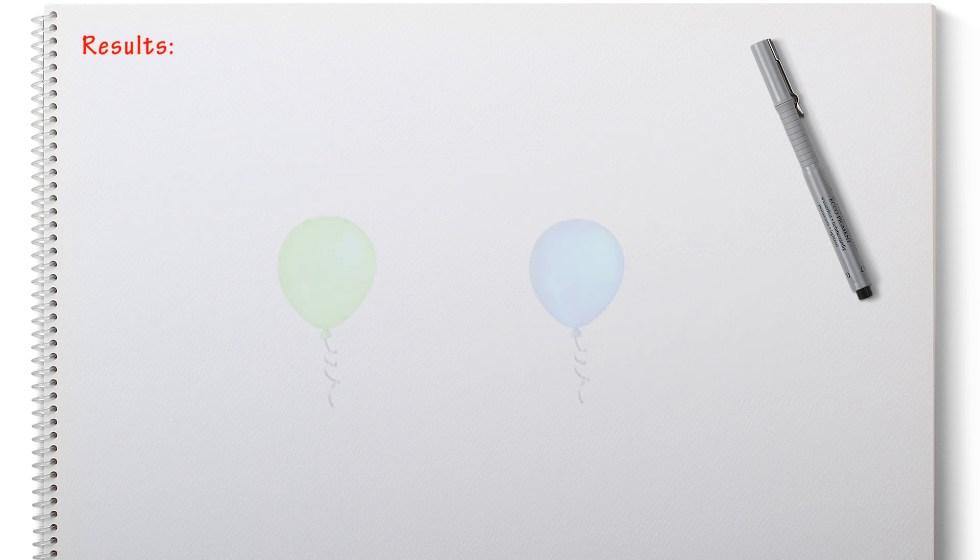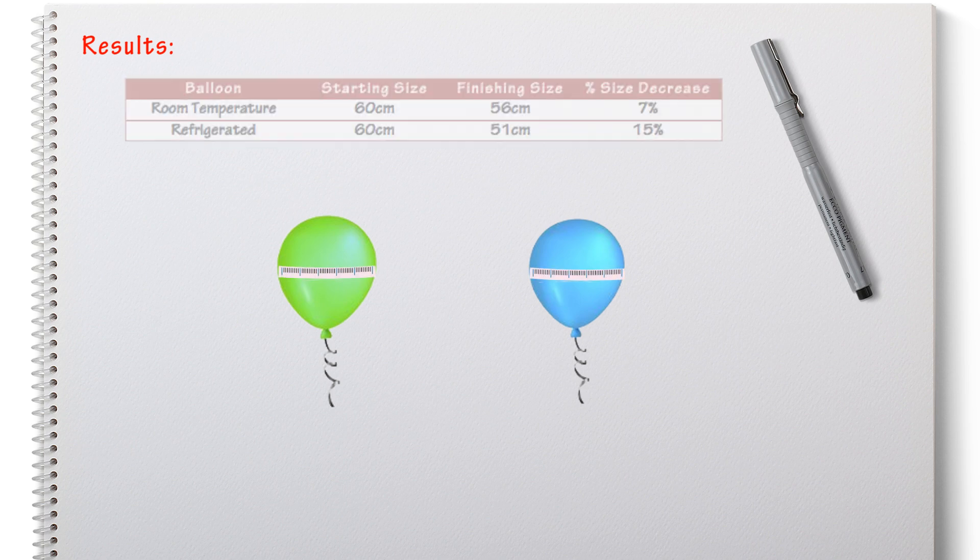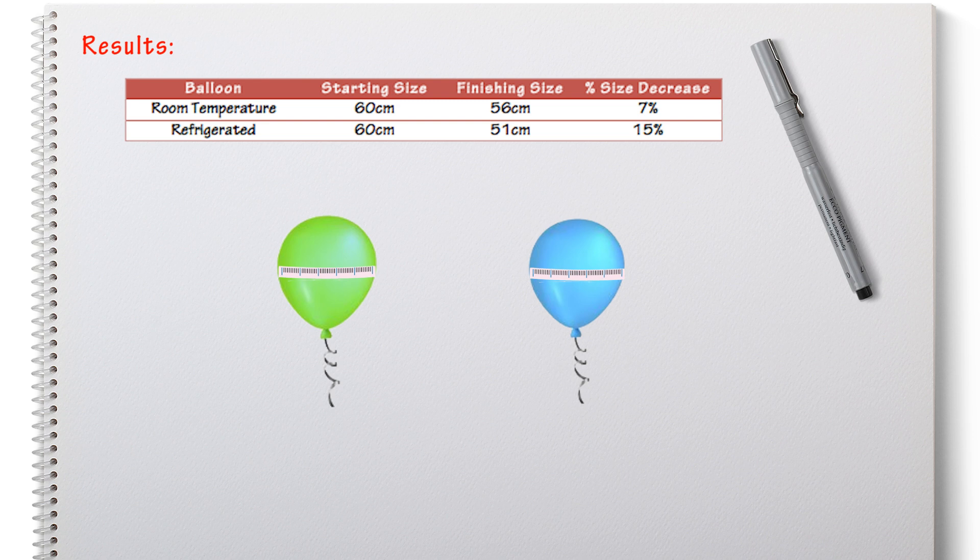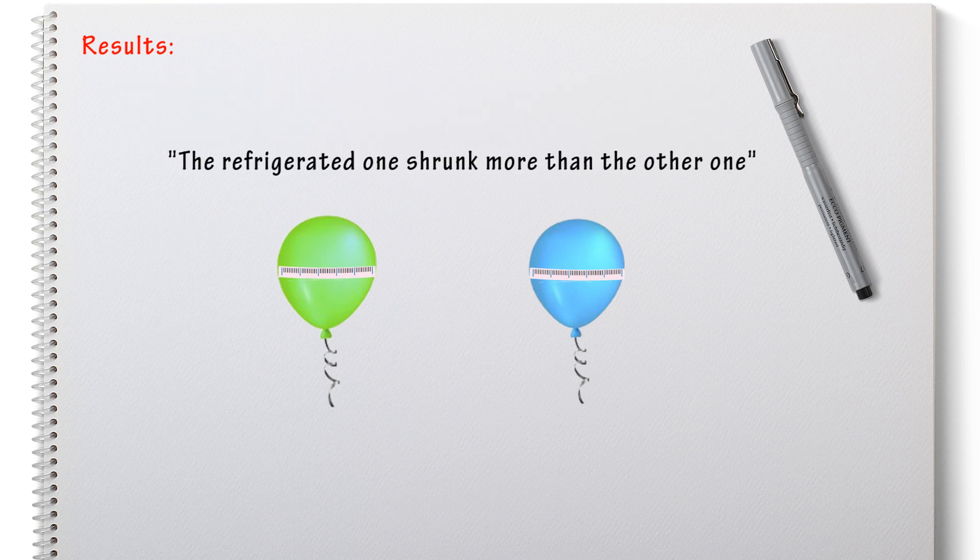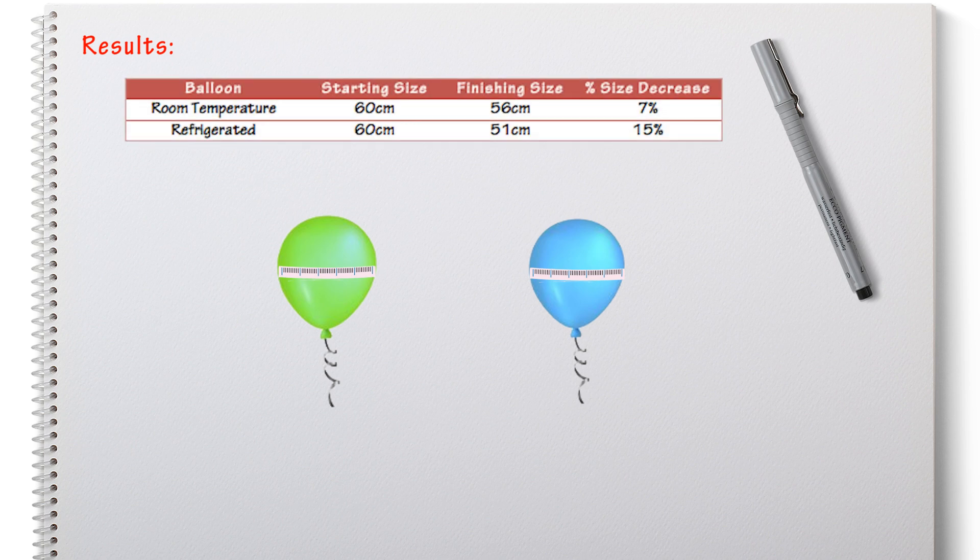Because I've measured the sizes of the balloons and I'm representing that as a percentage to allow comparison between the two balloons, I'm using quantitative data. I could simply describe the balloons and say that the one in the fridge is a lot smaller than the one that wasn't in the fridge but that's nowhere near as precise as actually being able to use measurements to compare the two sizes.